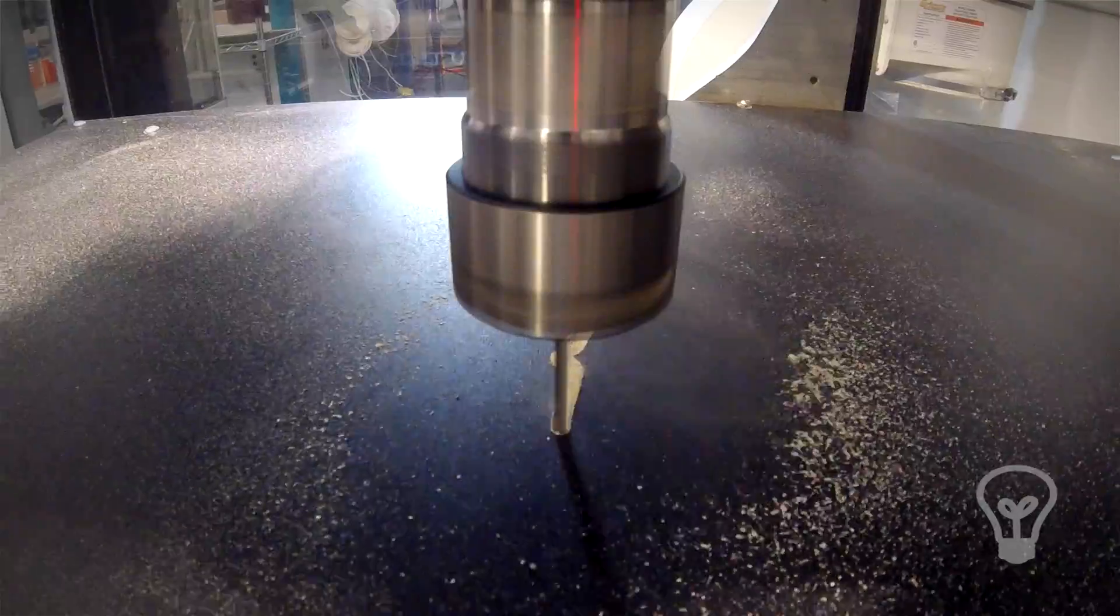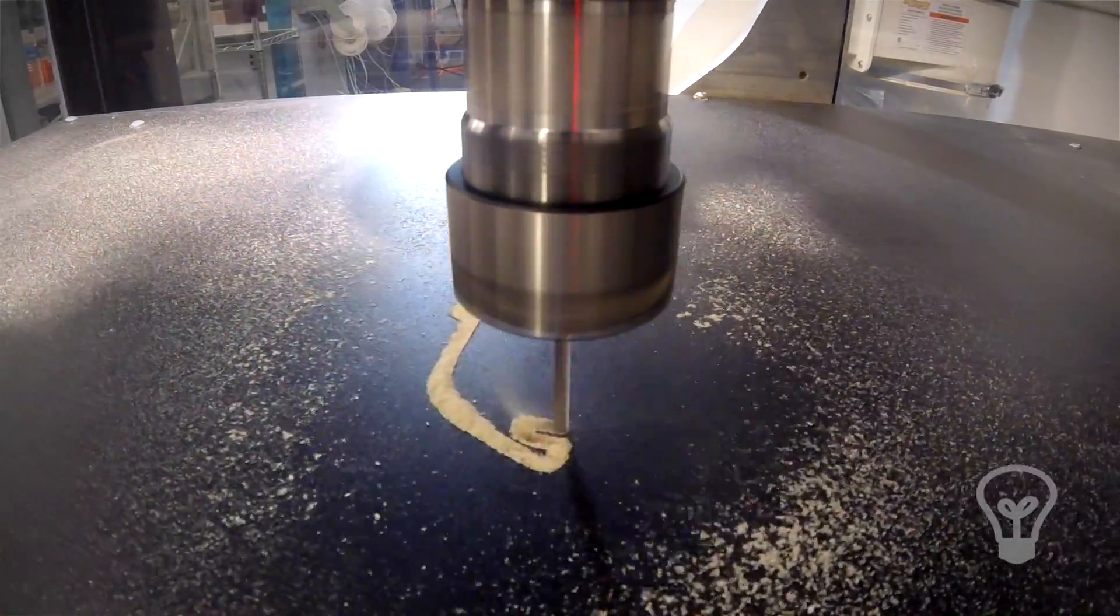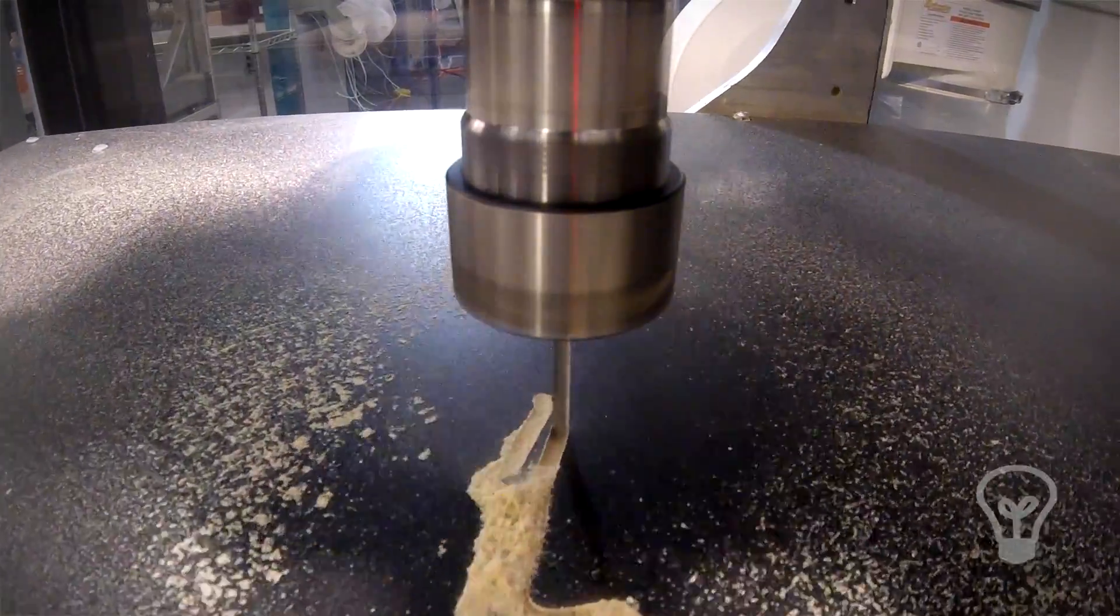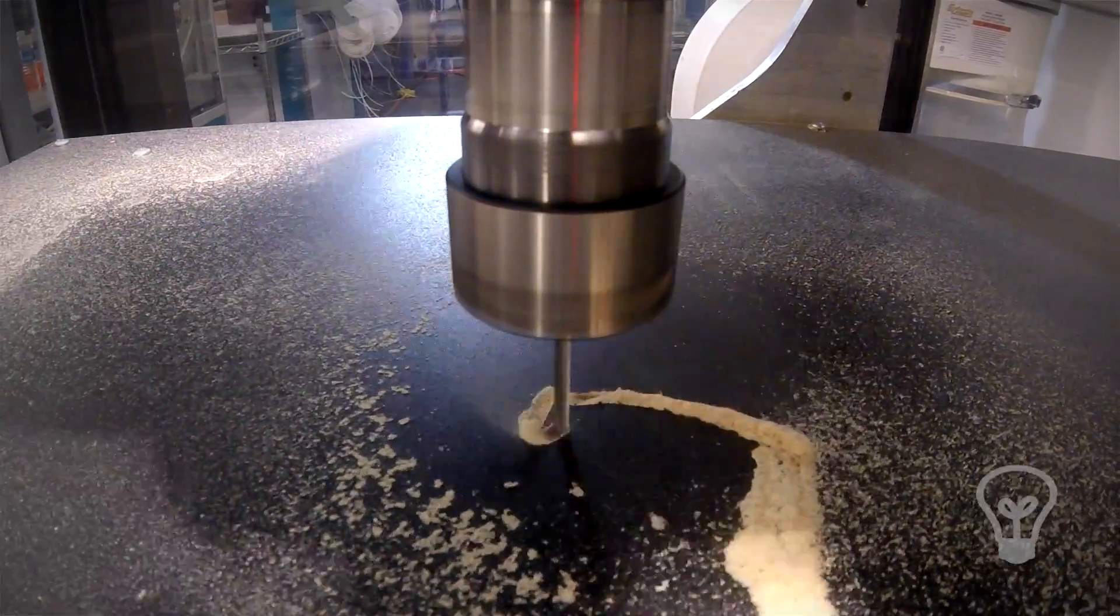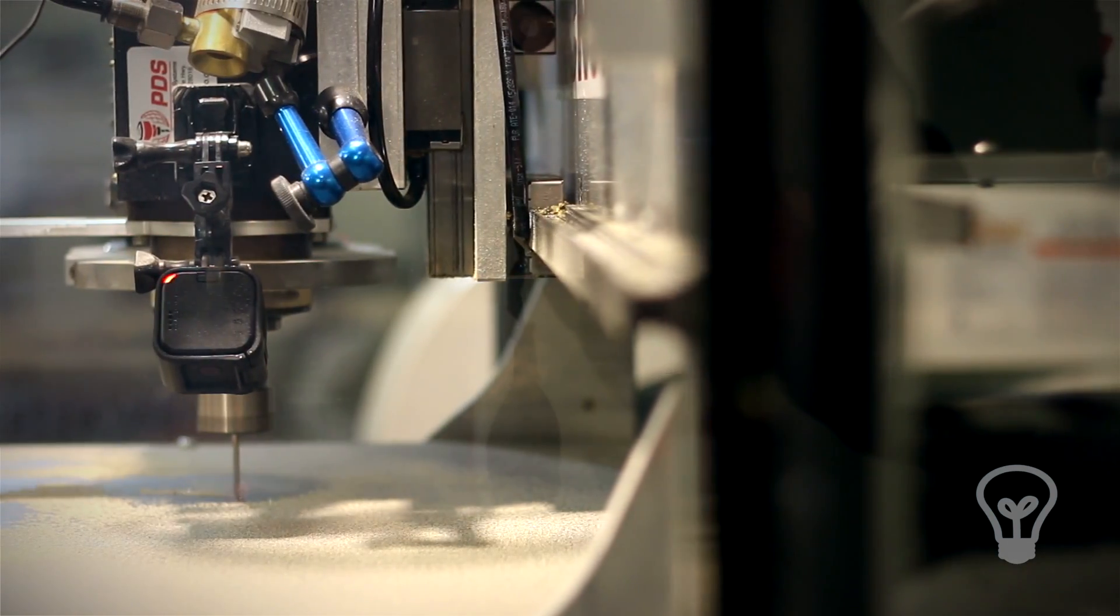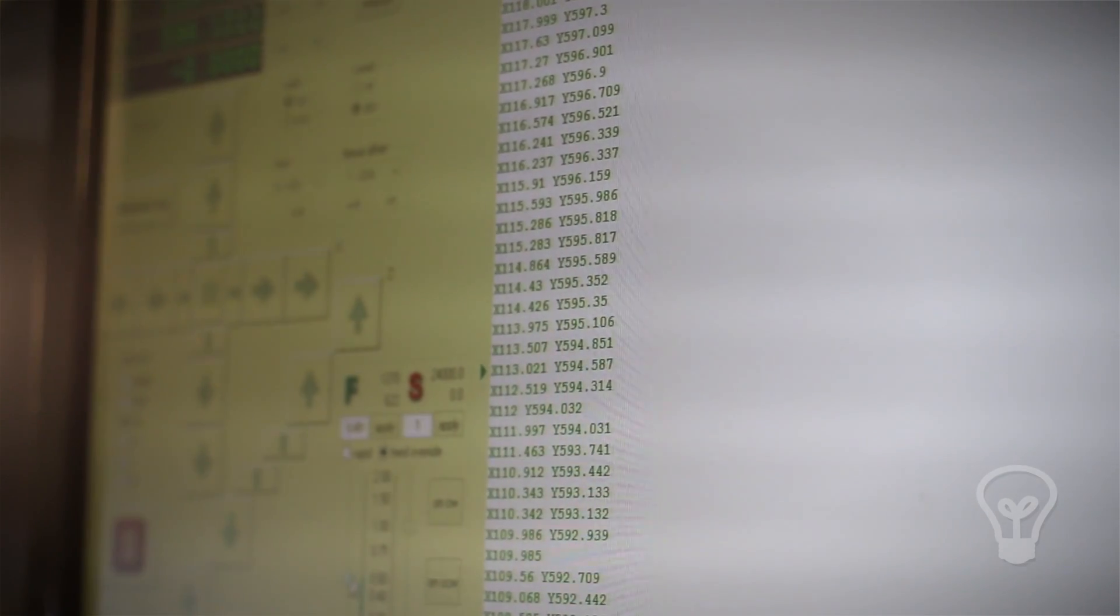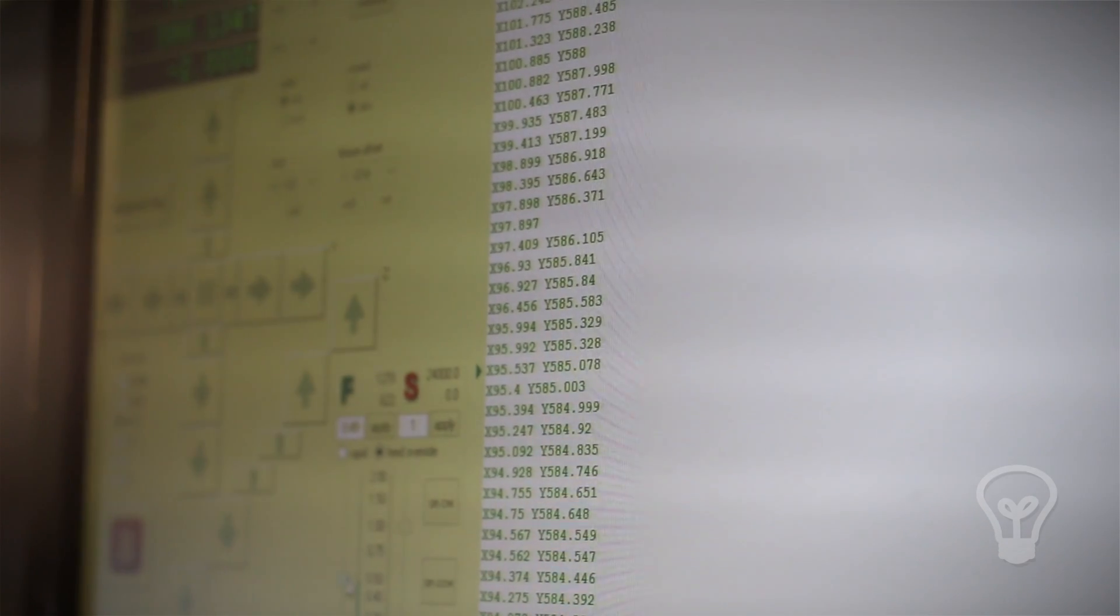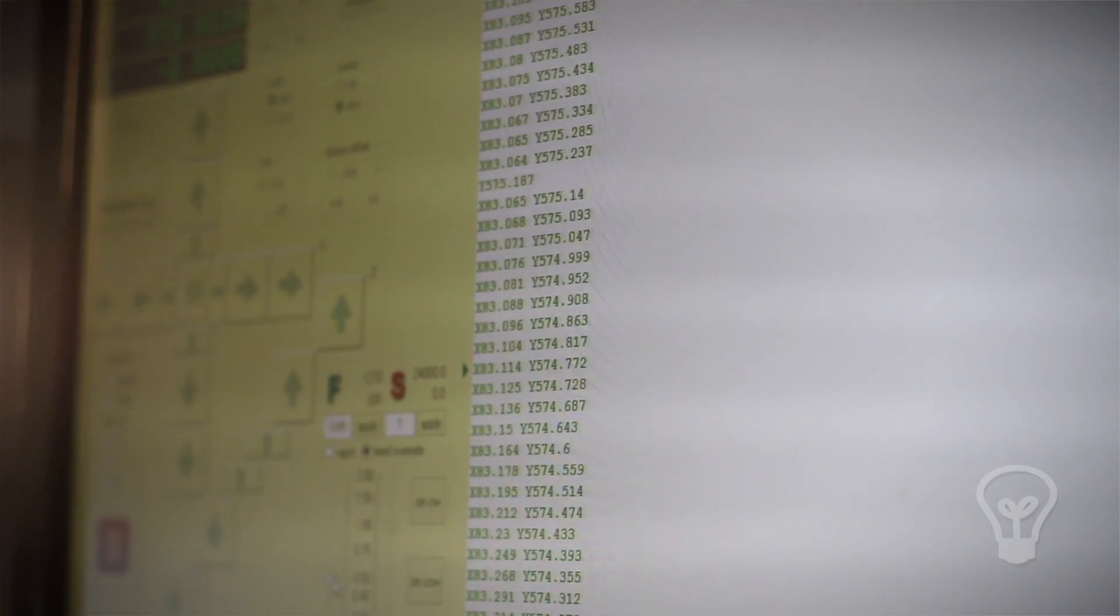So that's one of our racetracks. That actually happens to be Monaco. You can see it cutting out the path of the Monaco F1 race. And now we just have a waiting period while this machine cuts all the tracks out. Let's take a look at the screen and we can watch all the different commands it's doing. It's going through them quite quickly as you can see.